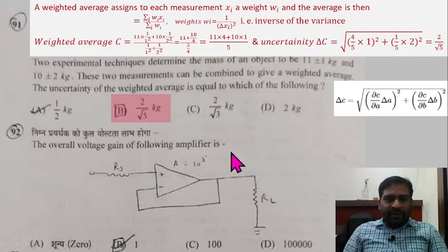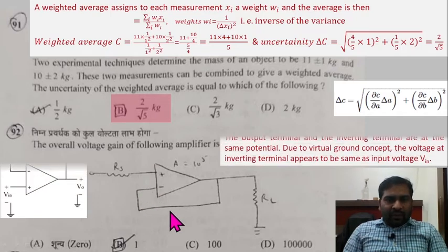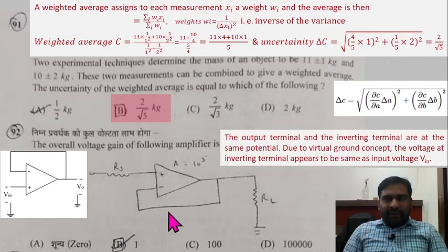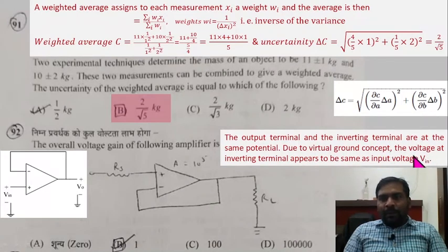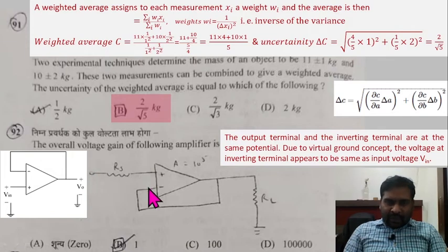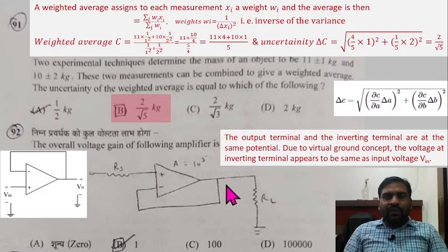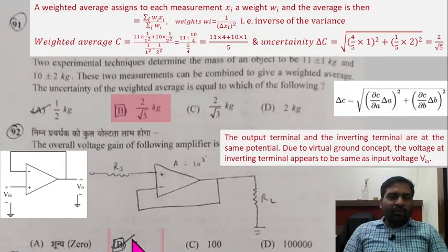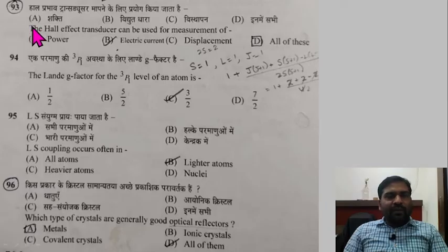Question 92: The overall voltage gain of this amplifier — the inverting terminal is connected directly to the output terminal. Due to virtual ground concept, the voltage at the inverting terminal equals the input voltage Vin. So the output equals the input, making the voltage gain equal to 1. Option B is correct.